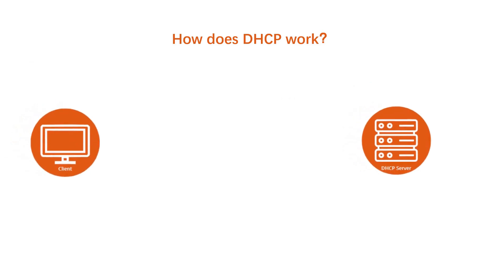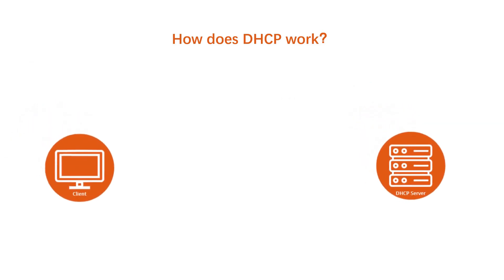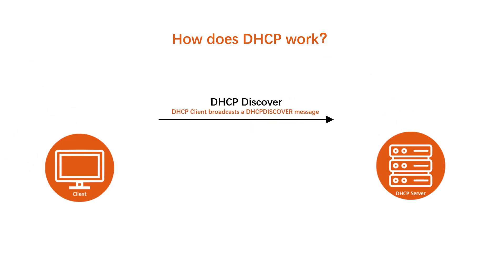Imagine we have a network of connected devices and a DHCP server that manages the IP addresses. Step 1: DHCP Discover. When you connect a new device, it still does not have an IP address and will search for one. It will call over the network for a DHCP server, and this request will arrive to all of the devices, including the server.